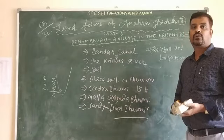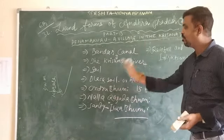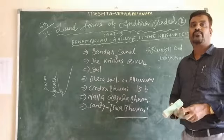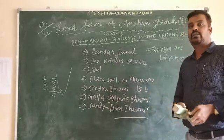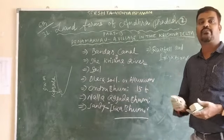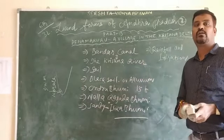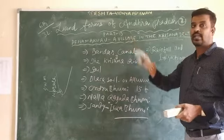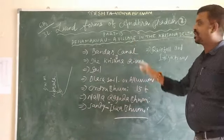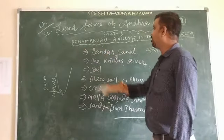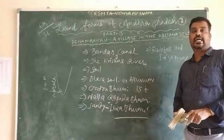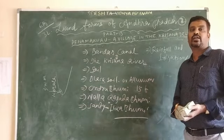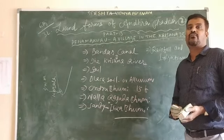Due to the Southwest Monsoon, we receive good rainfall here. There is also good sunshine and warm temperature, which makes it possible to raise crops throughout the year. Panamakuru is very near to the Krishna river, and that is why groundwater can be found at a depth of only 15 to 25 feet.